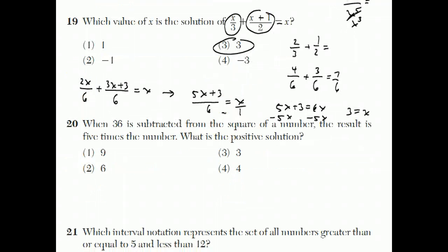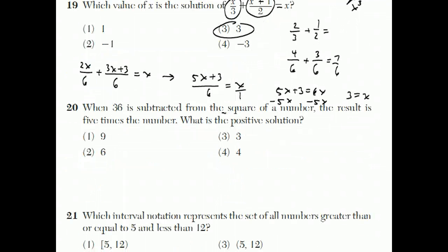Moving on to number 20. When 36 is subtracted from the square of a number, the result is 5 times the number. What is the positive solution? You could also test the four choices to see which one would work, but I'm going to do it with algebra. 36 is subtracted from the square of the number, so the number is x. So 36 is subtracted from, so it's x squared minus 36, not 36 minus x squared.